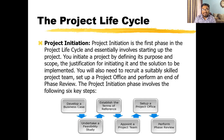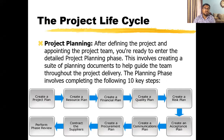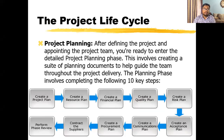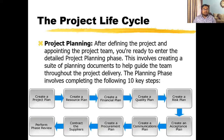Now the traditional project life cycle divides the project into four phases: project initiation, project planning, project execution, and project closure. In the project planning phase, you appoint the project team and prepare to enter detailed planning. There are 10 steps in this planning phase, and the flowchart will help you remember them.